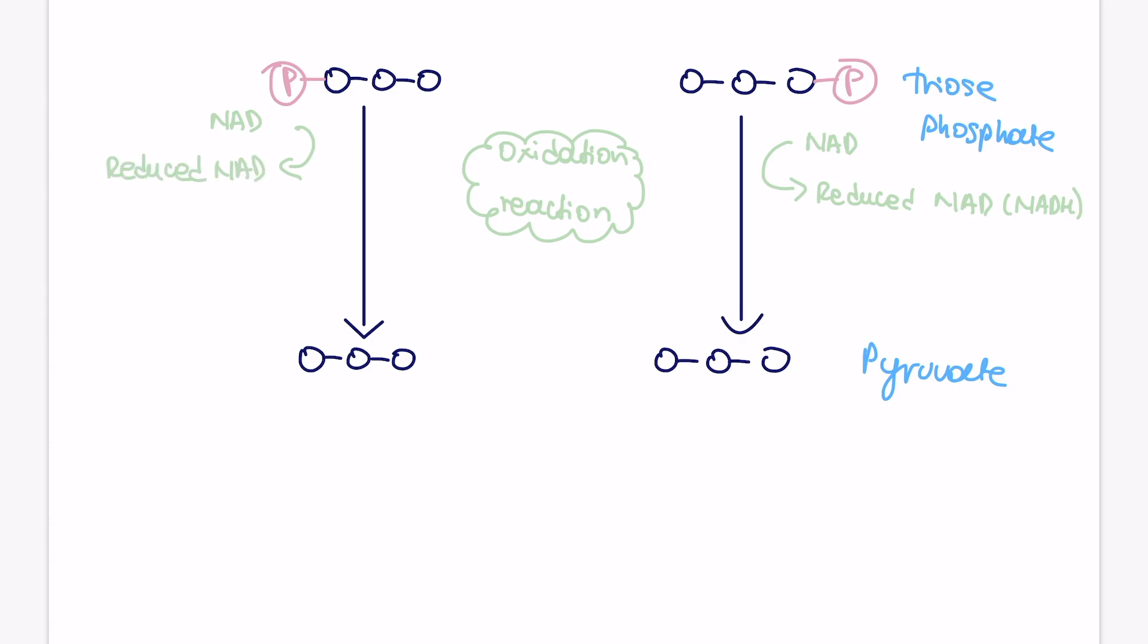So each conversion is going to basically produce two reduced NAD molecules, so one per triosephosphate. And at the same time, this conversion from triosephosphate to pyruvate is also going to be producing two ATP molecules per one triosephosphate molecule.